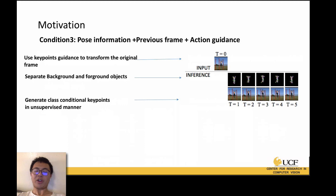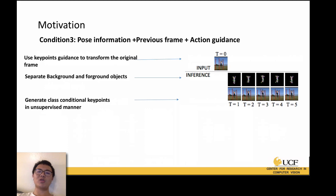So the authors use keypoint guidance to transform the original frame, separate the background and foreground objects to generate the translated image, and generate class-conditional keypoints. The third category, which our paper belongs to, uses pose information, previous frames, and action labels, but generates pose in an unsupervised way.